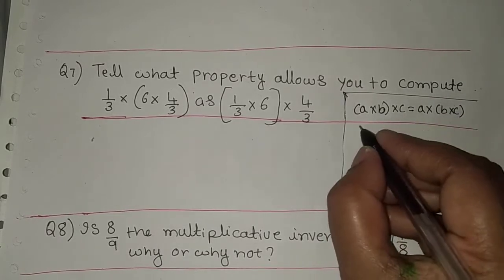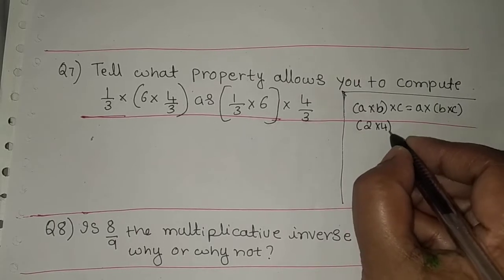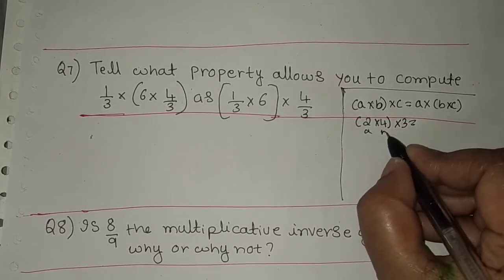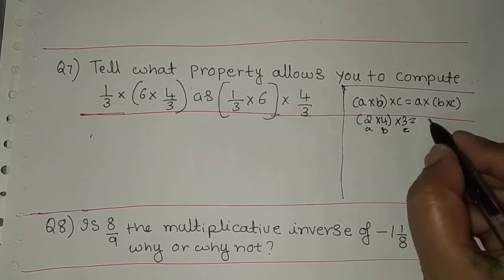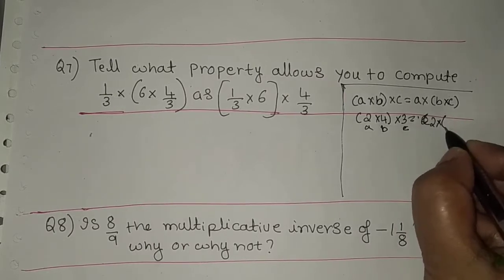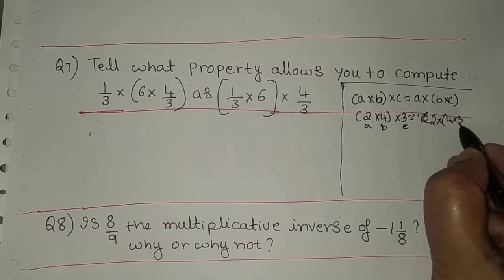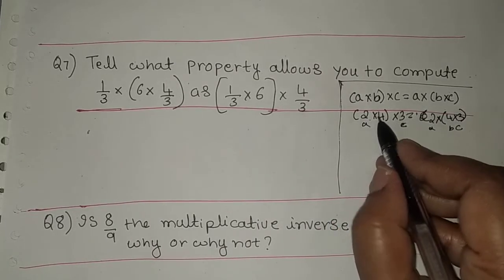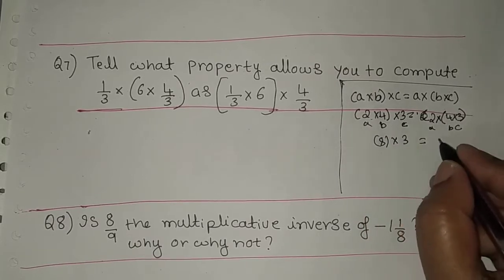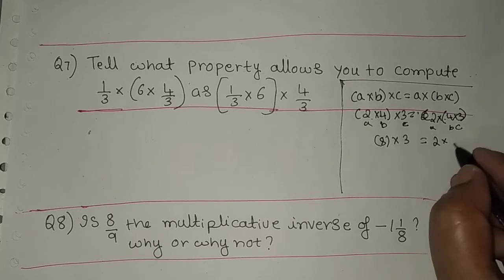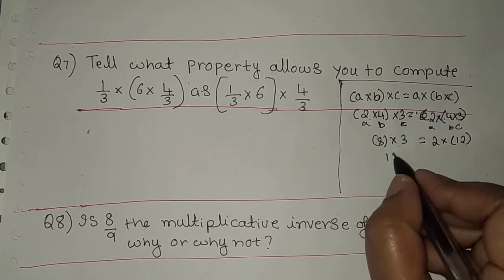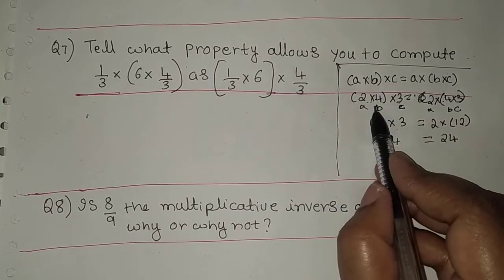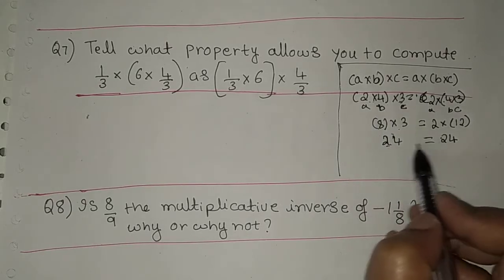This is called the associative property. For example, consider 2 into 4 into 3. We can compute it as (2 into 4) into 3, which is 8 into 3 = 24, or as 2 into (4 into 3), which is 2 into 12 = 24. The order of grouping is changed but the result is the same.